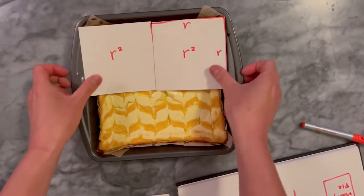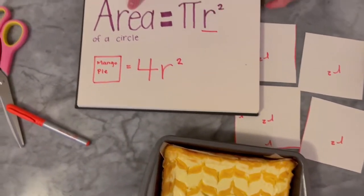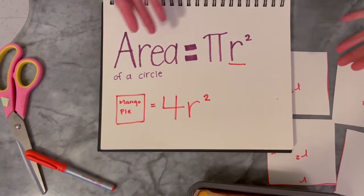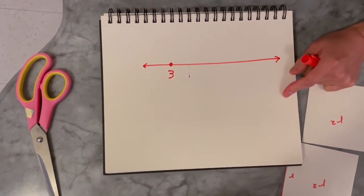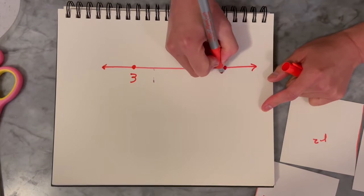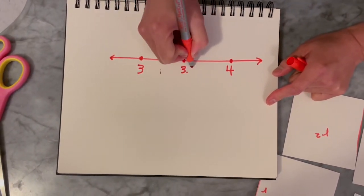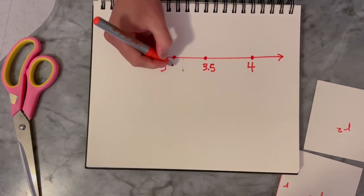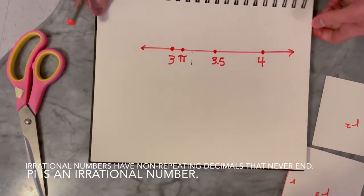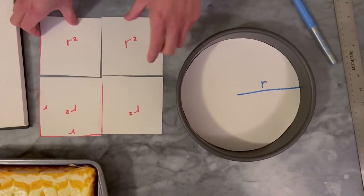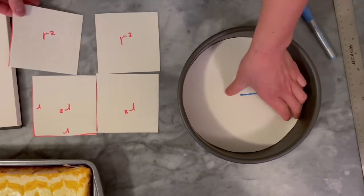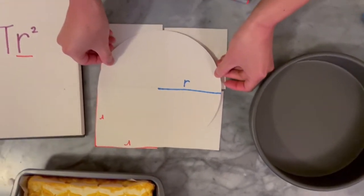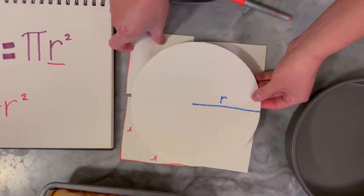Let's go back to the area of the circle. The question is: the area should be pi r squared — what does that mean? We're starting to uncover pi as a number. Three is a number on the number line, four is a number on the number line, three and a half is a number on the number line. Similarly, pi is just a number on the number line — a little more than three, about 3.14159, with digits that never end.